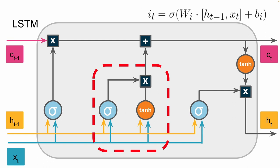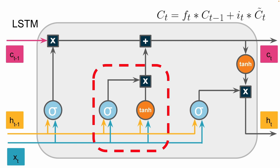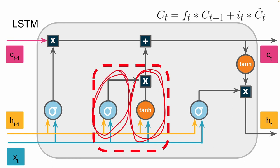To go along with the input node, we have an input gate. Like the forget gate, the input gate takes in the previous hidden state and the current inputs, combines them using weights and a bias, and sends them through a sigmoid activation function. The output of this input gate tells us how much of that proposed memory — generated by the input node — should actually be added to our long-term memory, the cell state. To update the cell state, we take the proposed update from the input node, multiply it by the values from the input gate, and add them with the previous cell state, giving us our updated cell state.